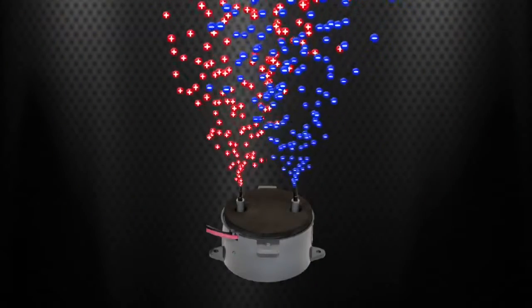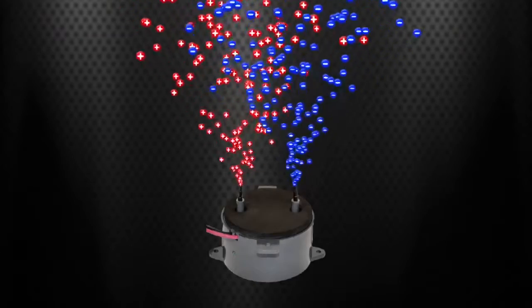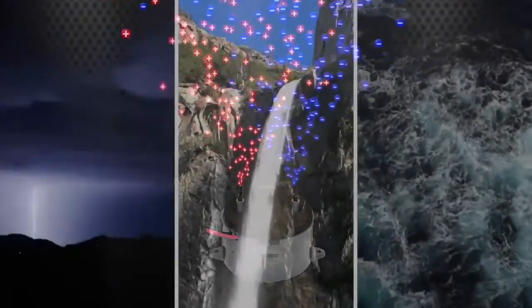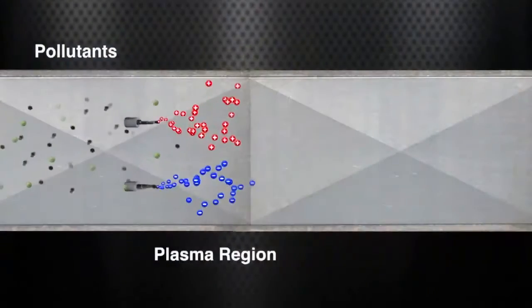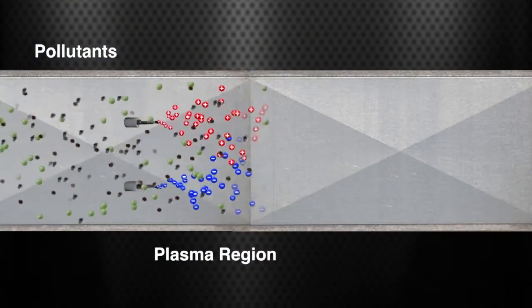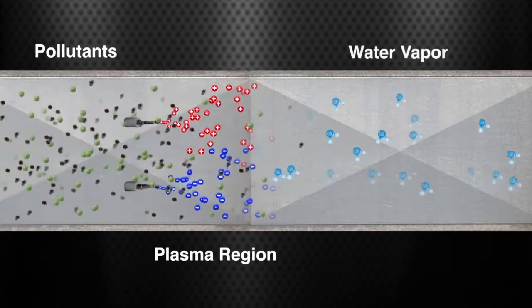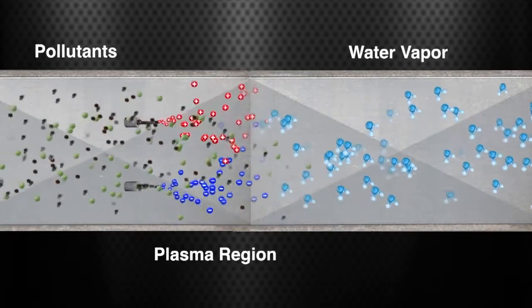This air scrubbing technology generates the same ions as nature creates with lightning, waterfalls, and ocean waves without developing harmful ozone. When these ions are injected into the airstream, they break down passing pollutants and gases into harmless compounds like oxygen, carbon dioxide, and water vapor.